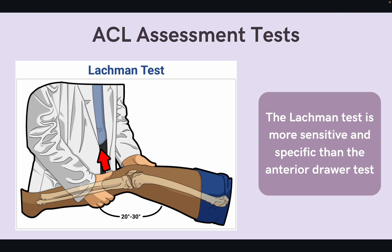The anterior drawer sign can also be used to evaluate the ACL, but it is not as specific or sensitive as the Lachman test. The main difference with the anterior drawer test is that the angle of the knee will be at about 90 degrees, but you are still feeling for that laxity in the joint. If there is a positive Lachman or anterior drawer test, then we're going to refer to ortho. We can instruct the patient on care with RICE — rest, ice, compression, and elevation — however, the rest of the plan of care and any decision about possible surgery will be made by orthopedics.